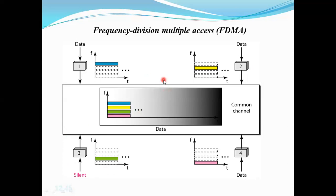In an earlier module, we discussed FDM — Frequency Division Multiplexing. Conceptually, FDMA and FDM look similar, but there is a lot of difference. FDM operates at the physical layer, whereas FDMA is concerned with the data link layer — this is the major difference between the two.